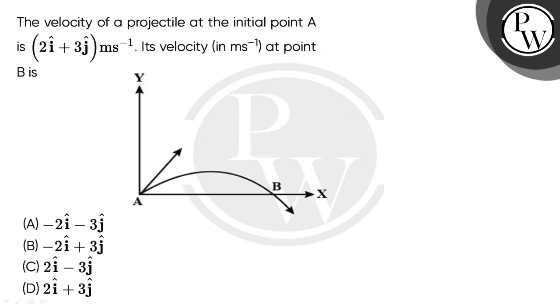Hello, let's read the question. The velocity of a projectile at the initial point A is 2i cap plus 3j cap meter per second. Its velocity in meter per second at the point B is okay.